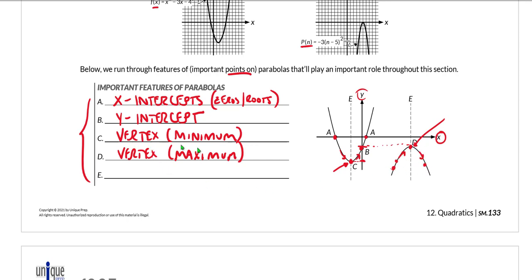So again, vertices are the turning points, but they can be either minimums or maximums depending upon the shape or orientation of the parabola. If the parabola opens down or is like a frown, then we have a maximum. If the parabola opens up, if it's a smiley face, then we have a minimum.